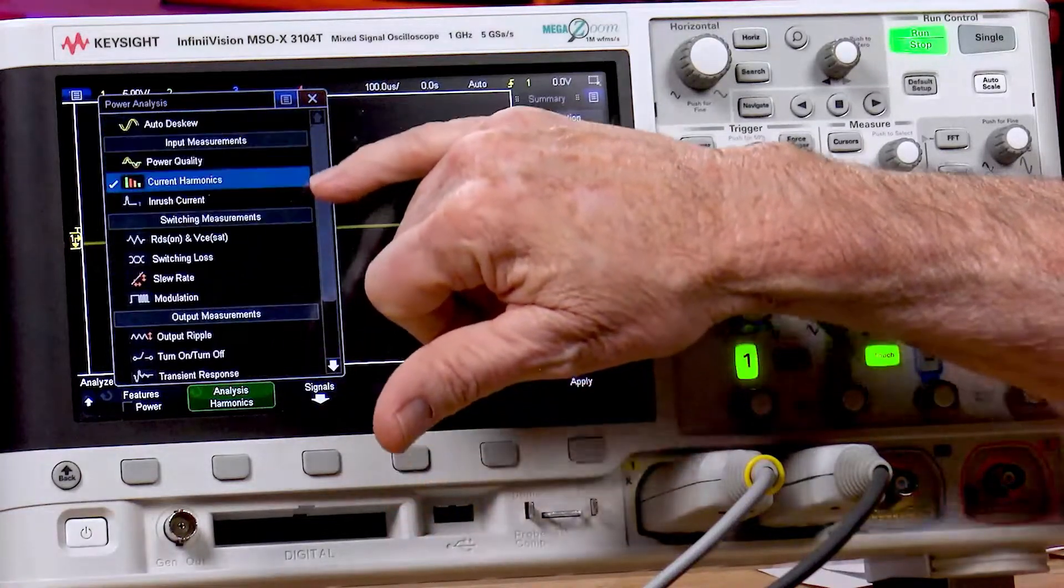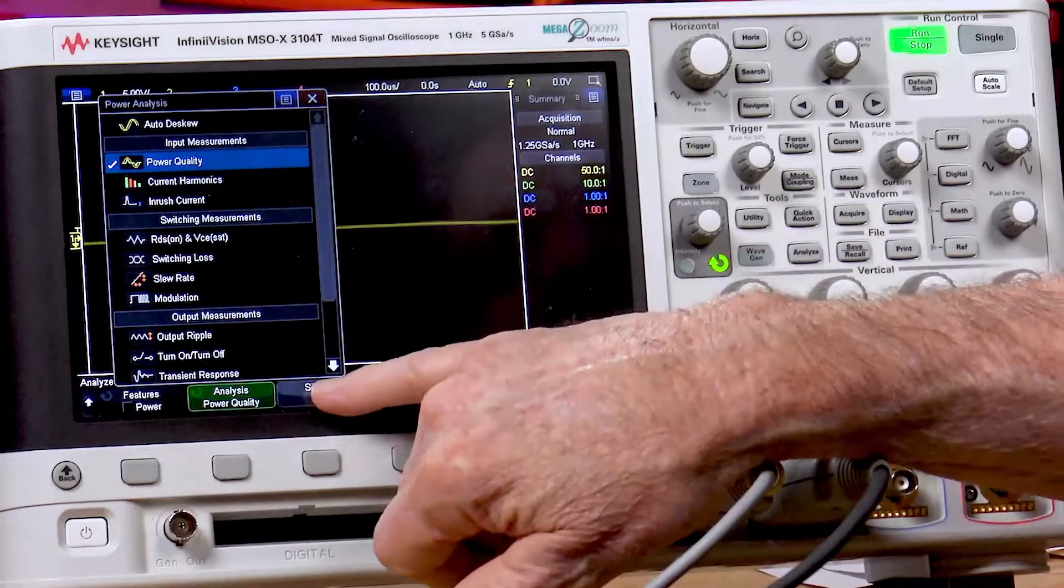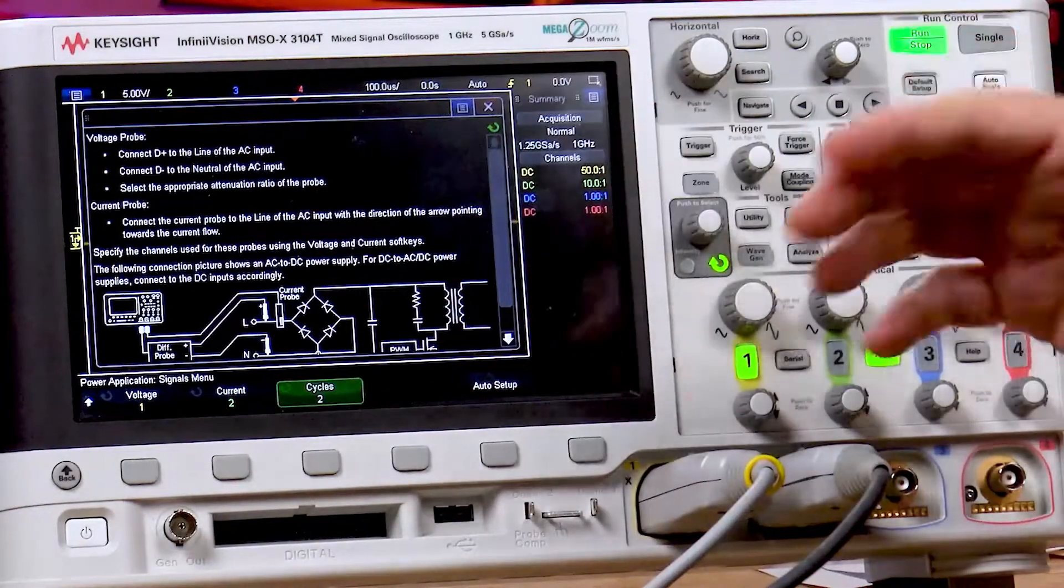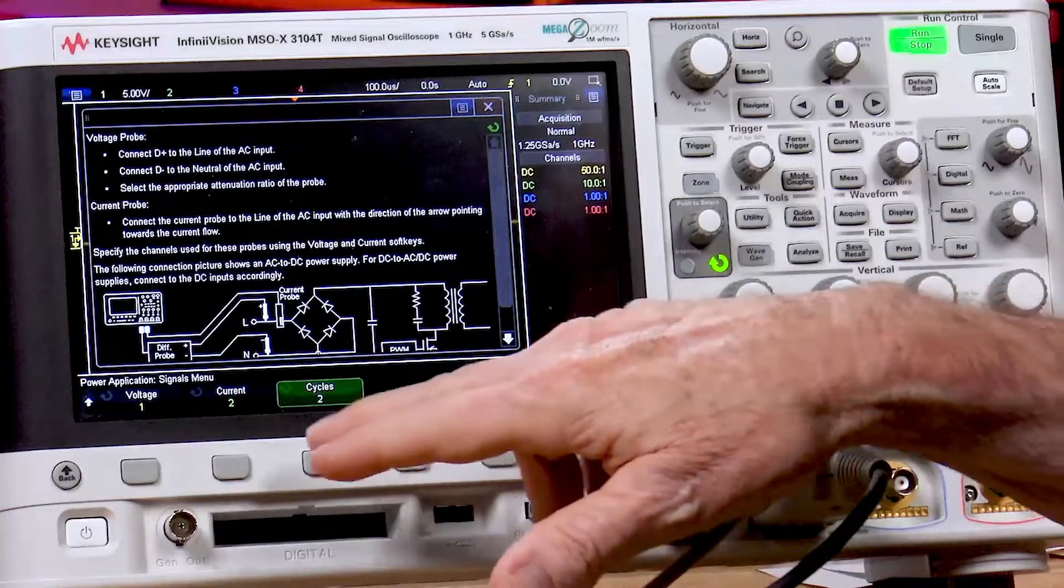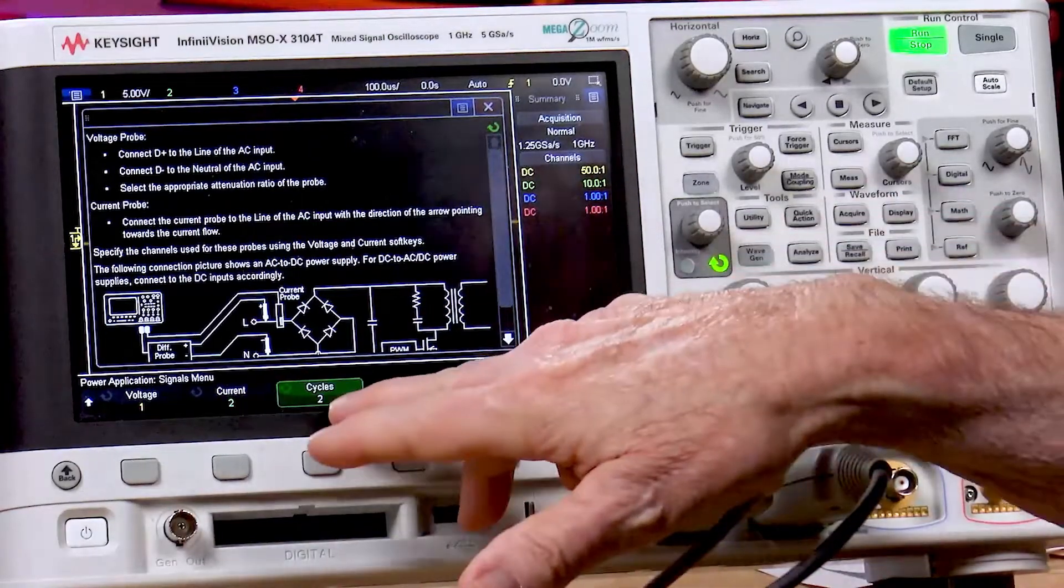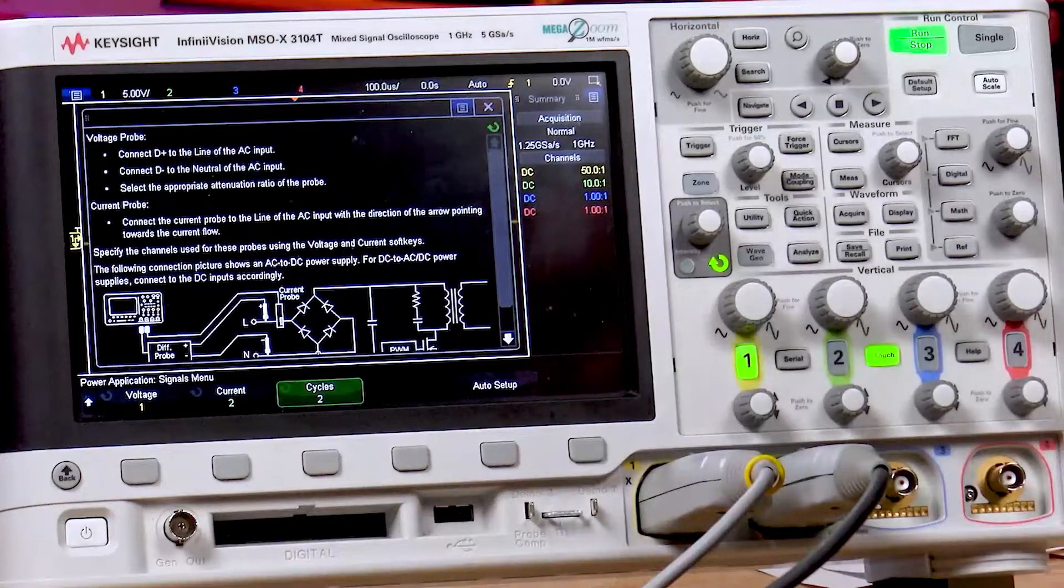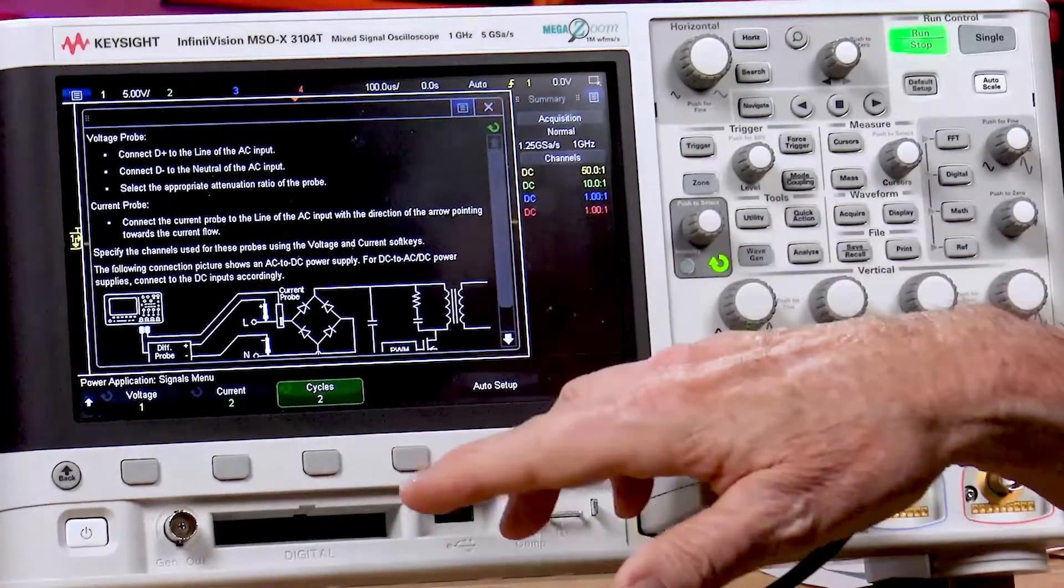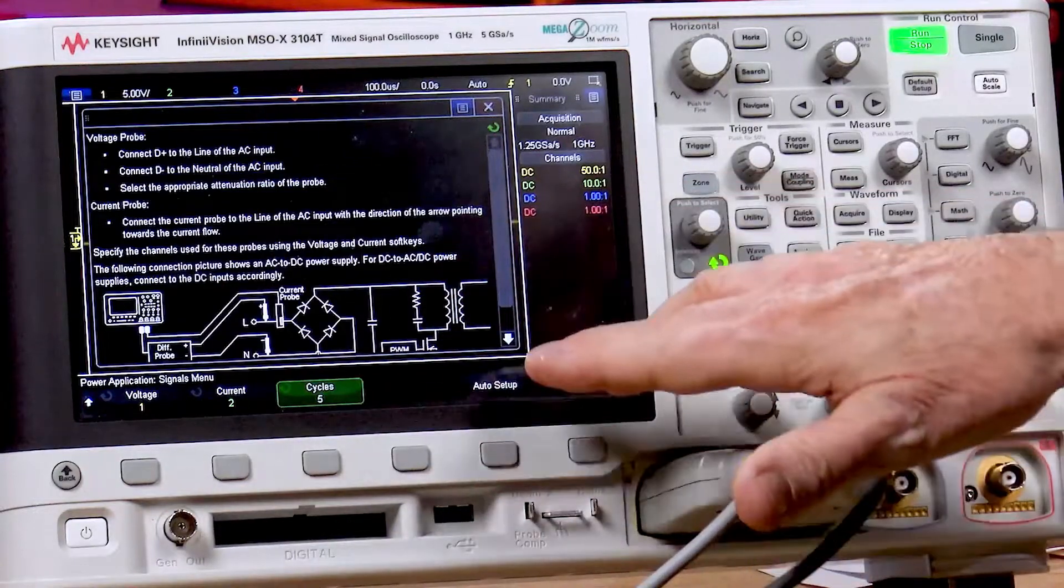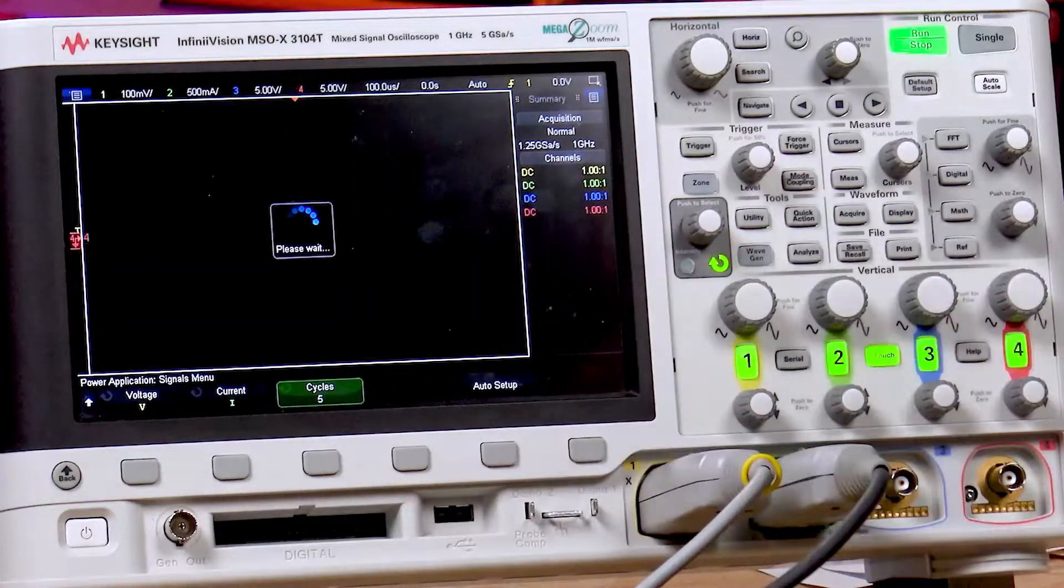Let's go back up here and select Power Quality, go into the Signals menu. It shows you how to connect up to the AC input, and you can assign which probe is voltage, which is current, and select how many cycles you want to perform this measurement on. The default is two, I'm going to change it to five, and then just select Auto Setup.